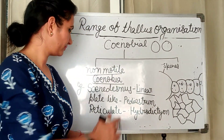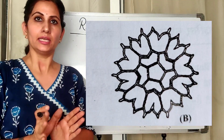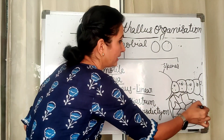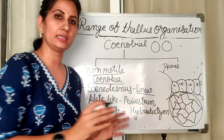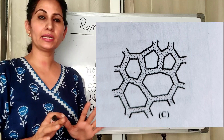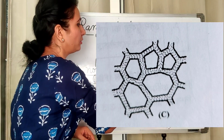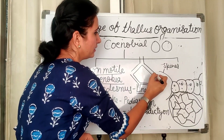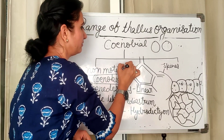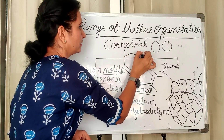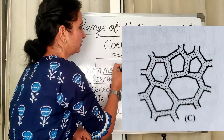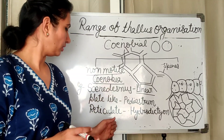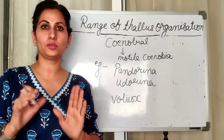Pediastrum is another non-motile coenobium — its individuals arrange in a plate-like shape. The third non-motile arrangement is reticulate, exemplified by Hydrodictyon. In Hydrodictyon, members are arranged in a network pattern — individual cells connect and form a net-like structure, which is why this arrangement is called reticulate.